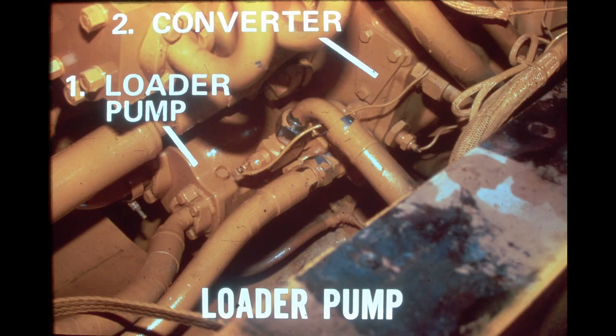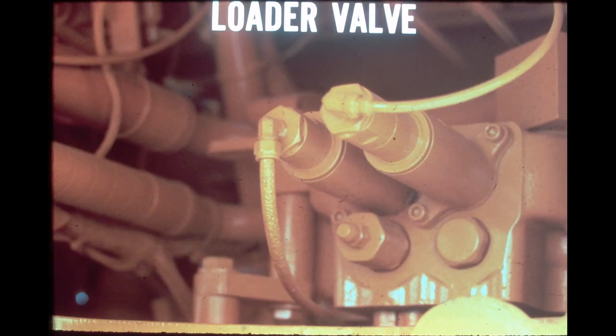The loader pump is also a gear-type pump, which is mounted on and driven by the torque converter. It supplies oil to the loader valve at the rate of 44 GPM at 2,500 RPM. The loader valve is a two-spool valve, located under the right side of the operator's compartment in the front frame. One spool controls the bucket operation and one controls the boom operation.